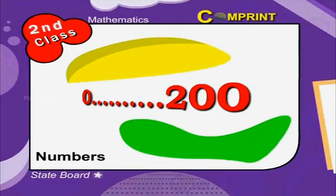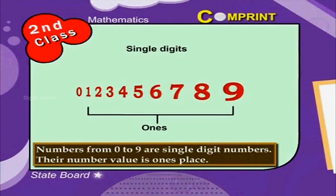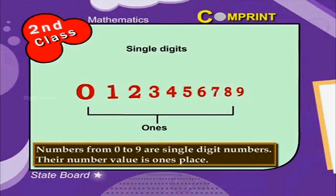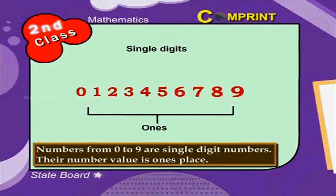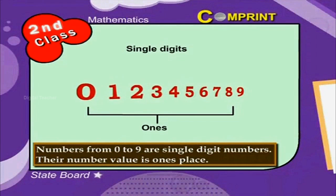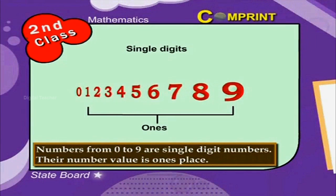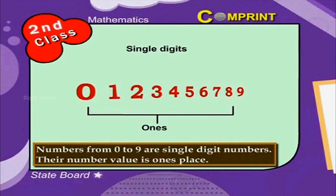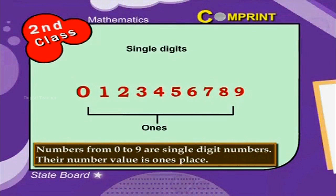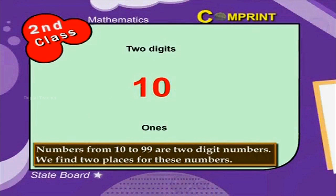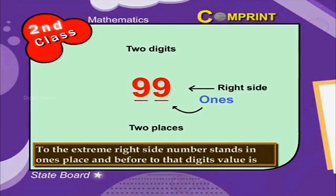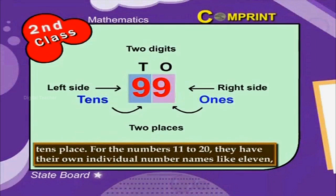Numbers up to 200. Children, you have learned numbers up to 100 in the previous class. Here we would like to give a brief recollection of those numbers. Numbers from 0 to 9 are single-digit numbers — their number value is one place. Numbers from 10 to 99 are two-digit numbers; we find two places for these numbers. The extreme right digit stands in ones place, and the digit before it is in the tens place.